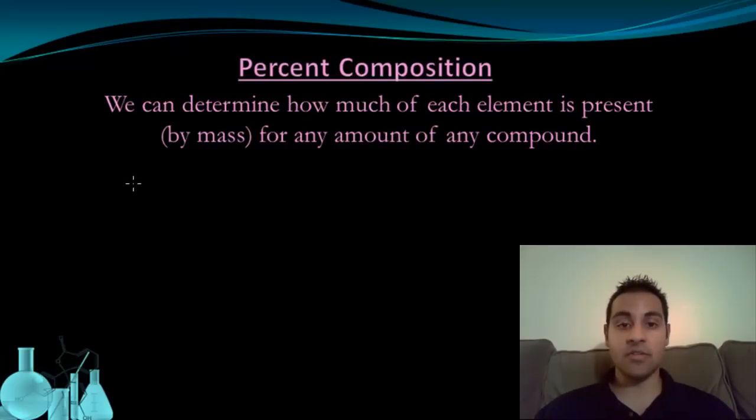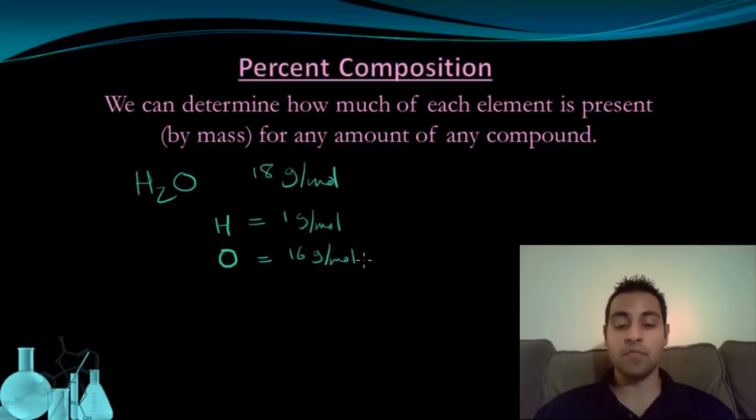So for example, let's look at water, H2O. Water has a mass of 18 grams per mole. We can further examine that and look at the individual components, hydrogen and oxygen. We know that hydrogen's mass is 1 gram per mole, and that oxygen's mass is 16 grams per mole. We can also see that there are two hydrogens and one oxygen.